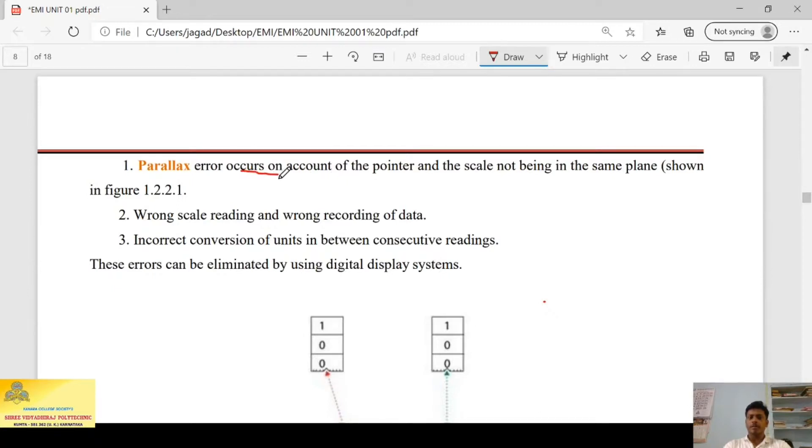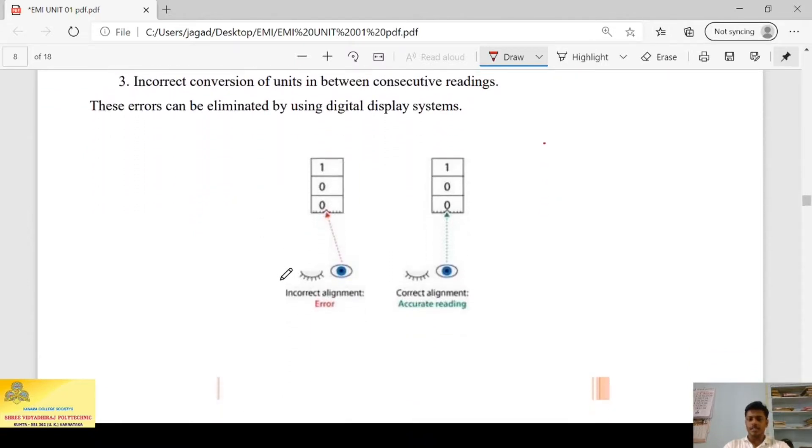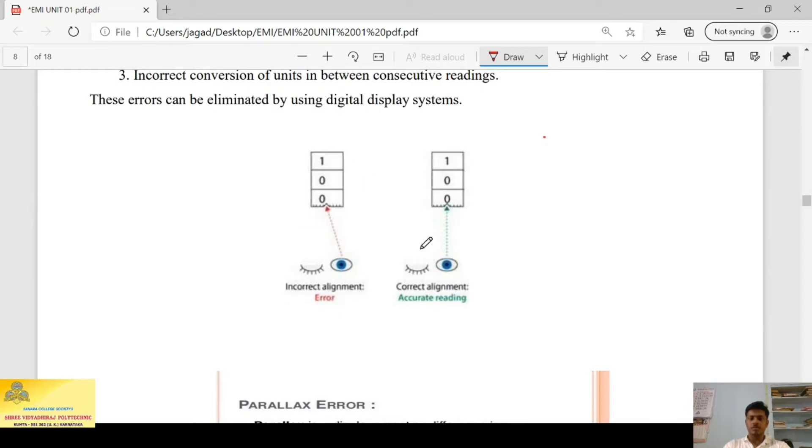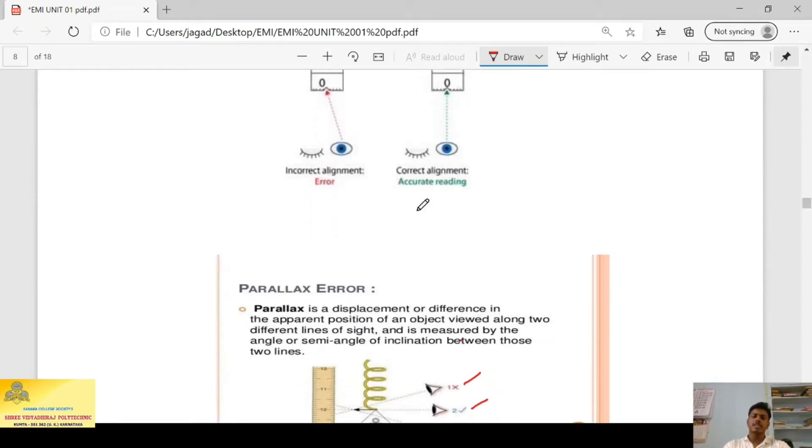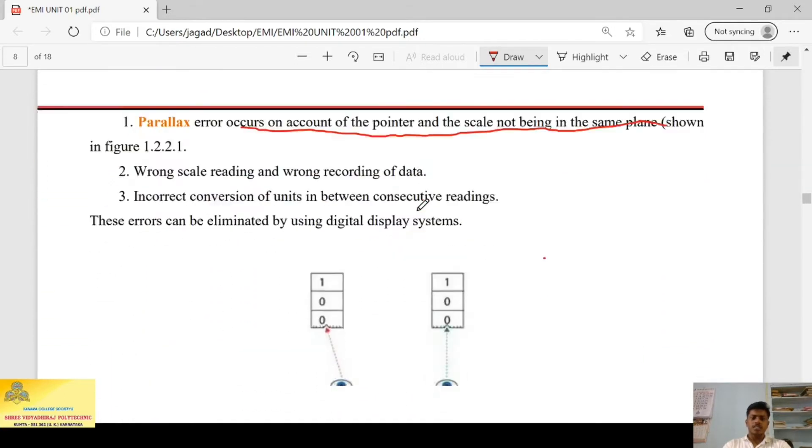Parallax error occurs on account of a pointer and scale not being in the same plane. Next we have wrong scale reading and wrong recording of data. Next we have incorrect conversion of unit in between consecutive readings. This diagram also says the same explanation, which is of observational errors.